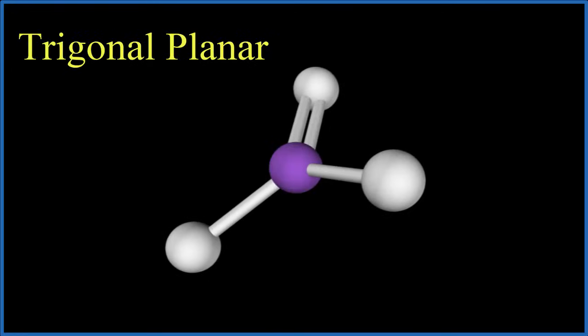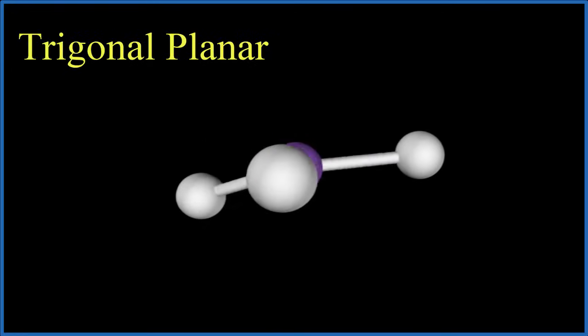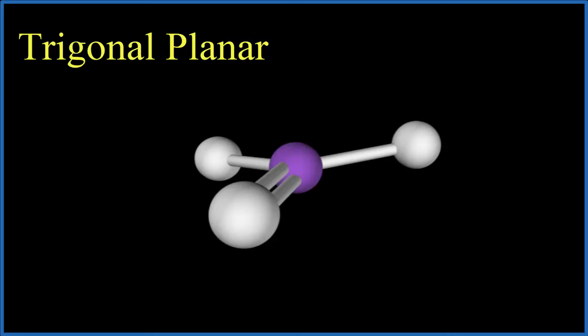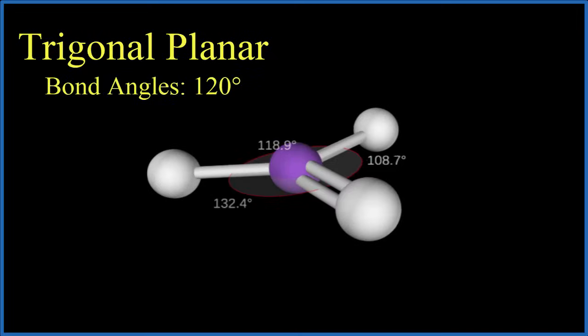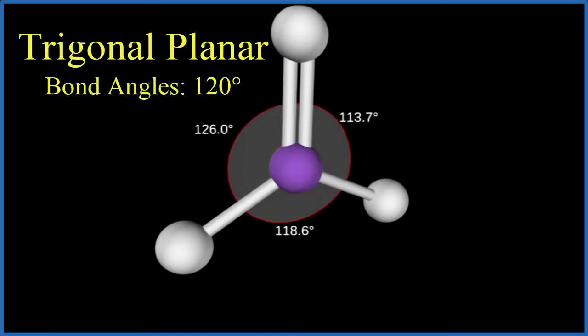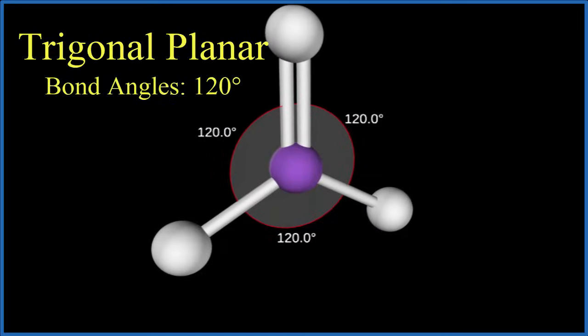So we end up with this planar molecular geometry for NO3 minus. It's called trigonal planar, and if we look at the bond angles here between atoms, they're 120 degrees. So this is our molecular geometry for NO3 minus, the nitrate ion.